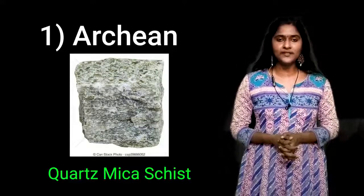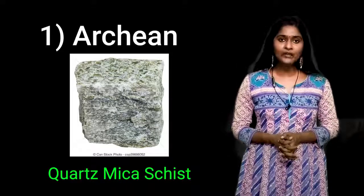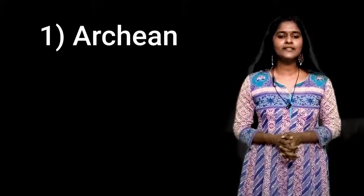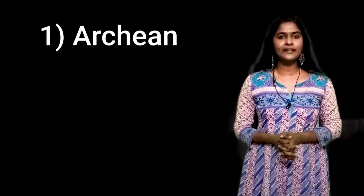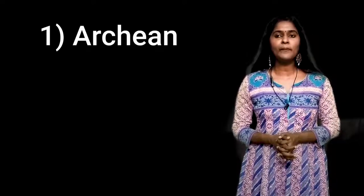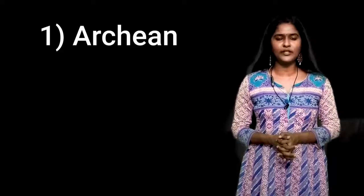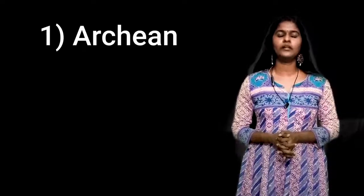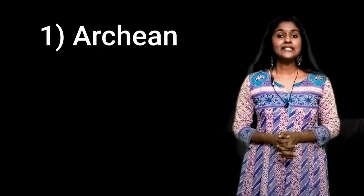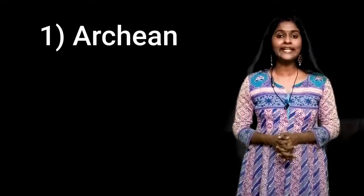Coarse mica schist with or without kyanite, kyanite-sillimanite schist, felsic volcanics, bedded magnetite quartzite, calc-silicate schist, mafic granulite, amphibolite and metapyroxenite are the chief components of the Wyanad Supracrustals. The Wyanad Supracrustals is the oldest rock in Kerala.